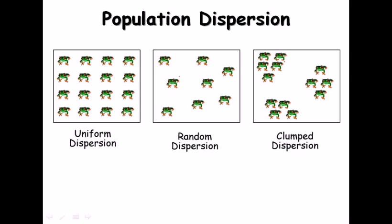The second type is random dispersion. As the name suggests, dispersion happens randomly — no order is found, just random scattering of individuals across the area. The third is clumped dispersion, where individuals are scattered but gather themselves into particular spots or clumps in different regions of their habitat.